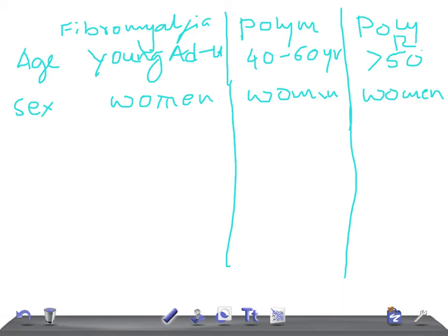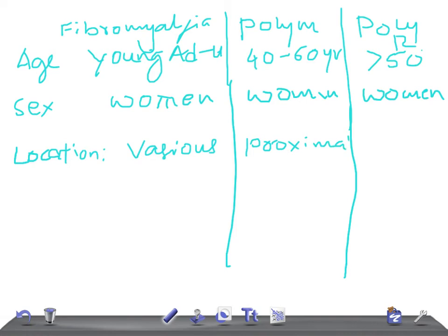Now let's talk about the location of the pain. In fibromyalgia, it can be various locations throughout the body. In polymyositis, the pain is in the proximal muscles. In polymyalgia rheumatica, it is the pectoral and pelvic girdle.